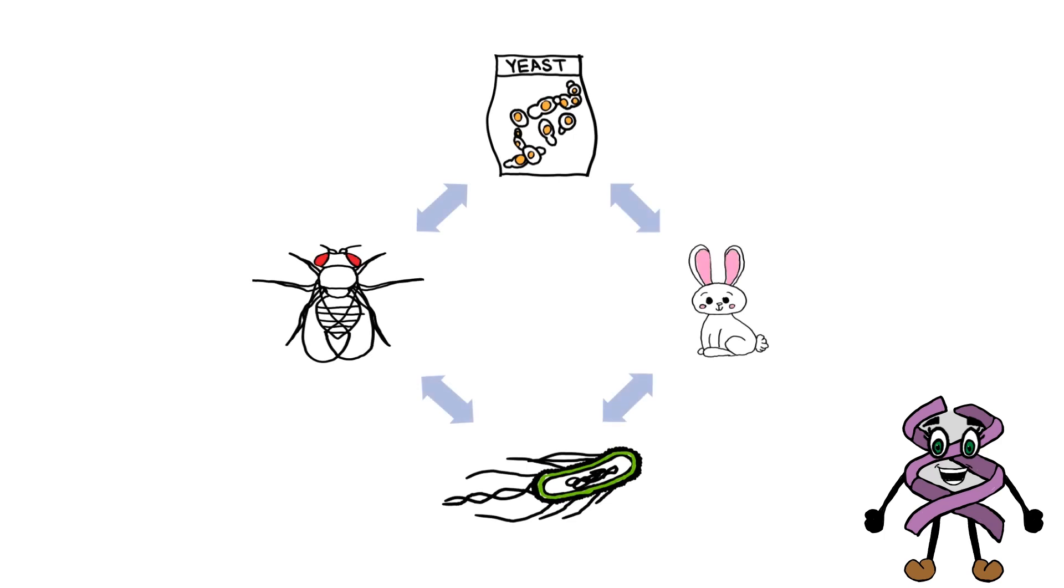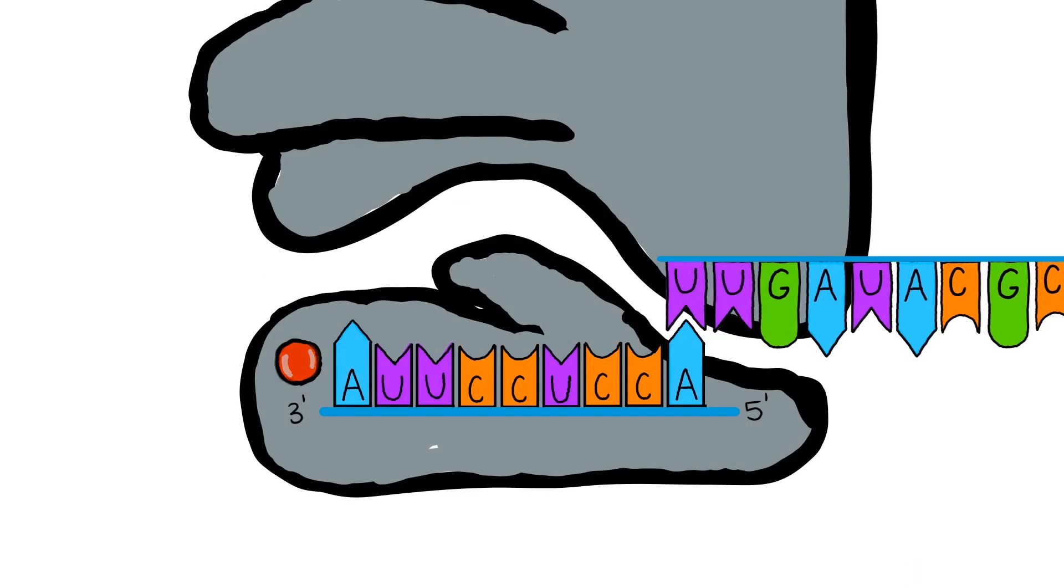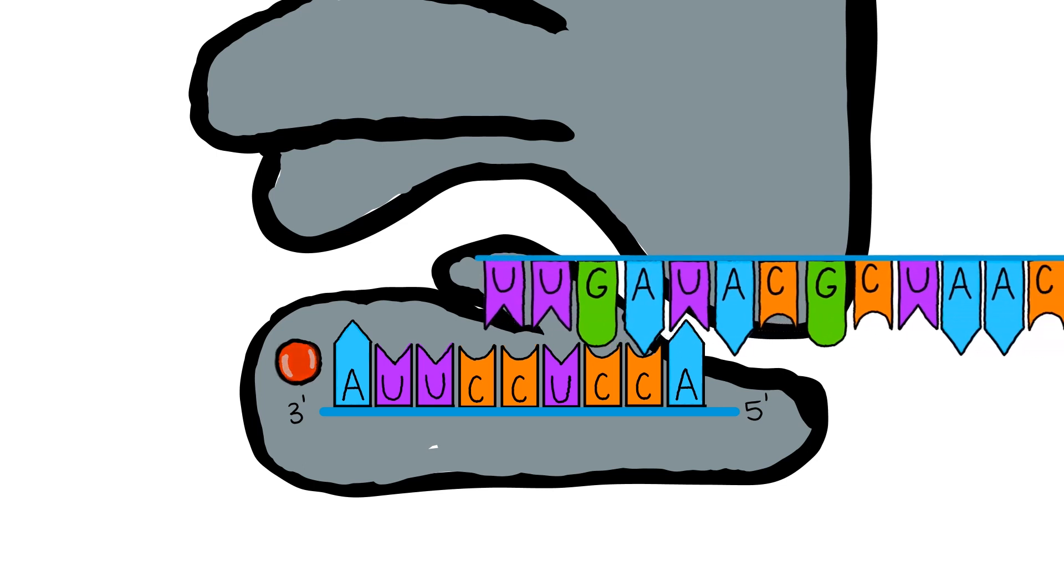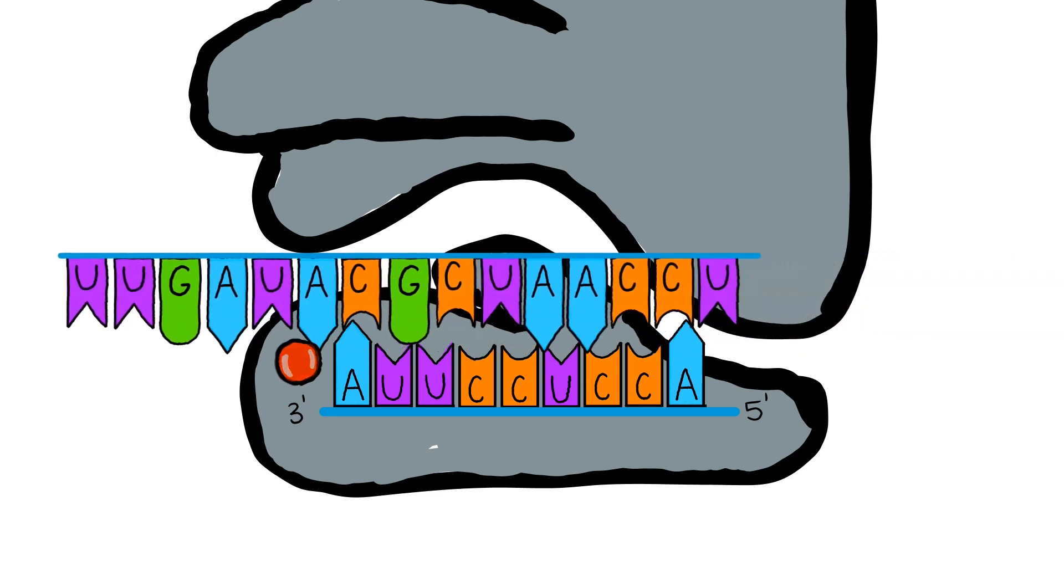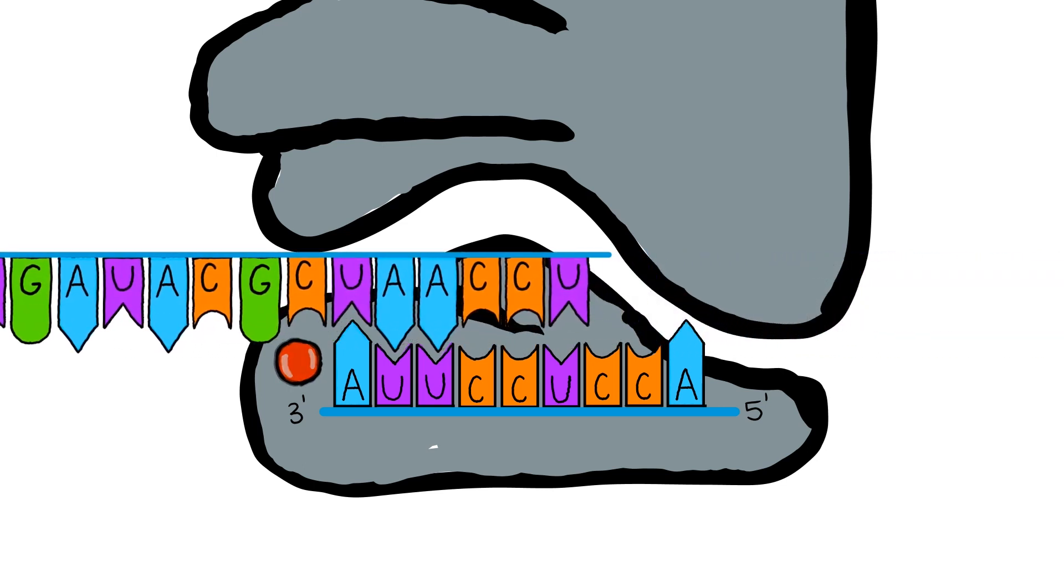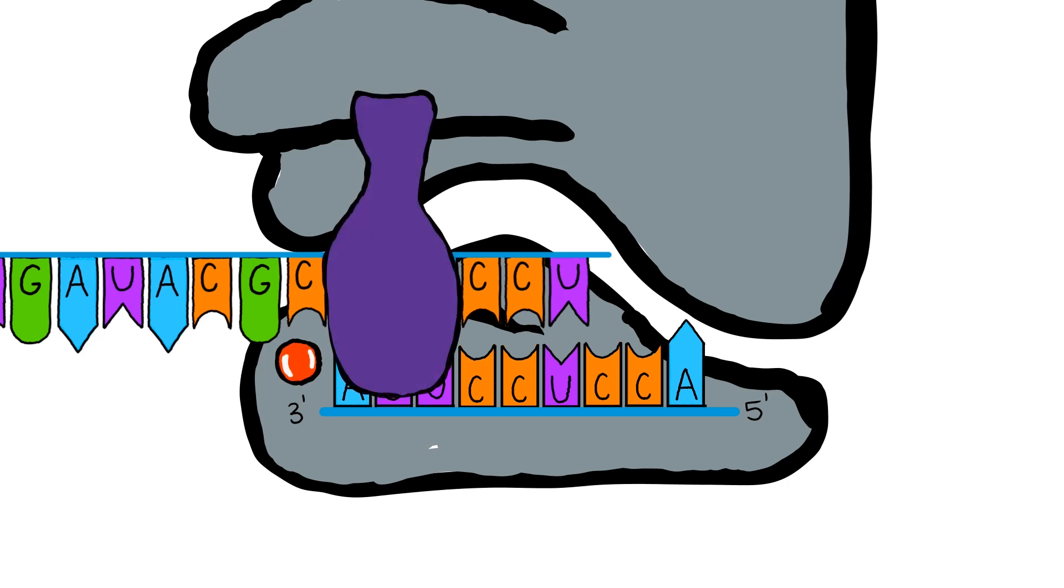This aligned with their predictions from their study with eukaryotes. Therefore, it was proposed that the small ribosome subunit is responsible for scanning the mRNA sequence for terminator codons and signalling the binding of terminator factors.